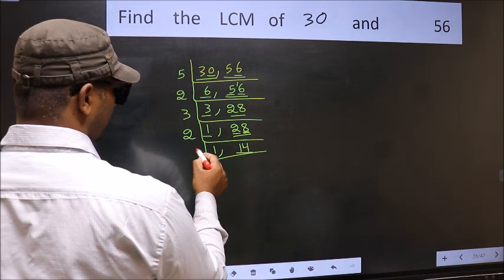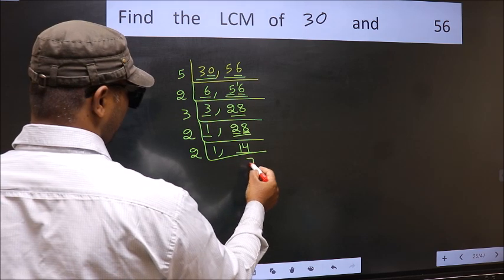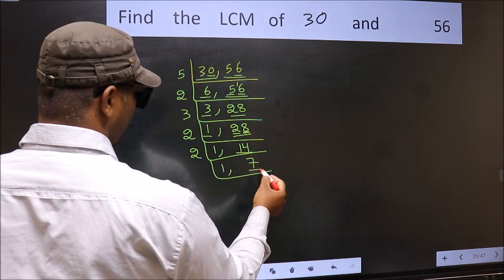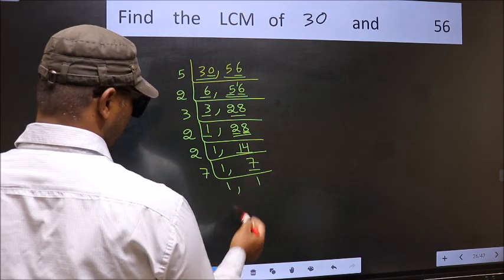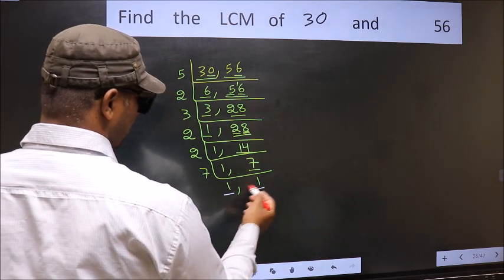Now here we have 14. 14 is 2, 7 is 14. Now we have 7. 7 is a prime number. So 7, 1 is 7. So we got 1 in both the places.